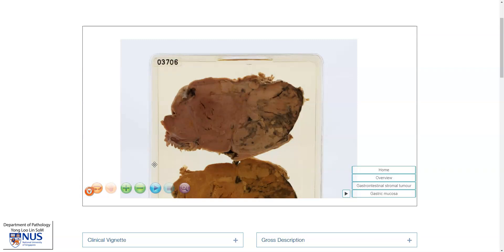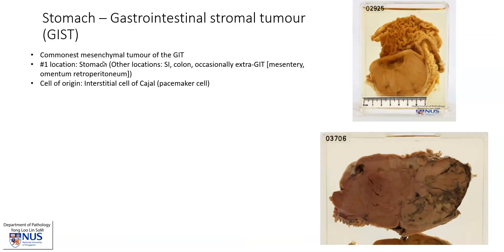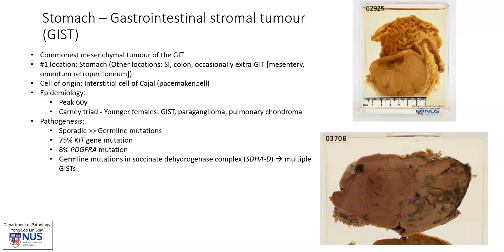Let's do a quick recap on GISTs. GISTs are the commonest mesenchymal tumor of the GI tract. They are commonest in the stomach, and they can also be found in small bowel as well as the colon, and even occasionally outside the bowel in the mesentery, omentum, or retroperitoneum. The cell of origin is the interstitial cell of Cajal, which is actually the pacemaker cell of the gut, responsible for the rhythm of peristalsis.